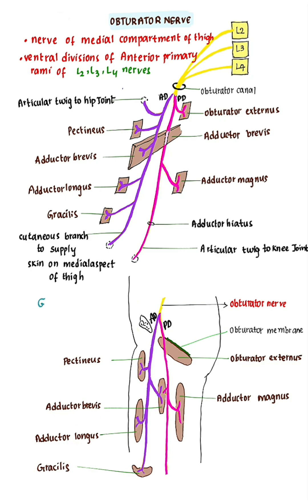Remember the mnemonic GAP: G — gracilis; A — adductor longus, adductor brevis; P — pectineus. Adductor brevis is supplied by both the anterior division and the posterior division. The anterior division also supplies the hip joint — it gives an articular twig to the hip joint. It also gives a twig to the subsartorial plexus.